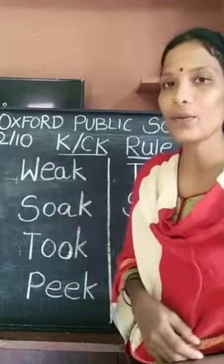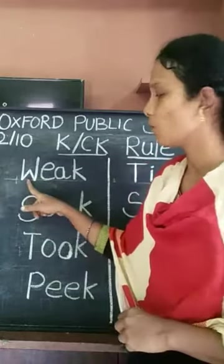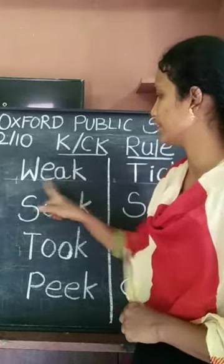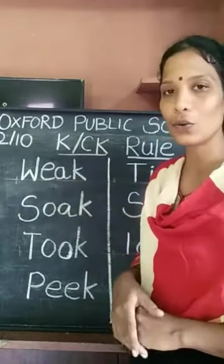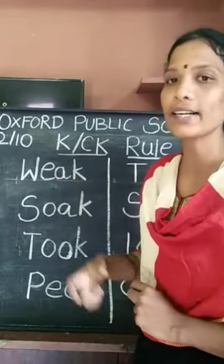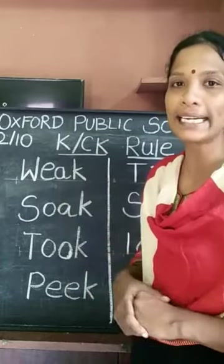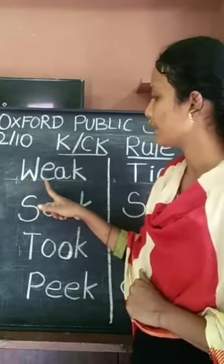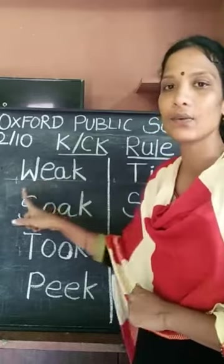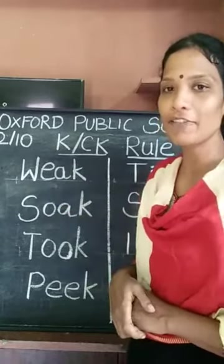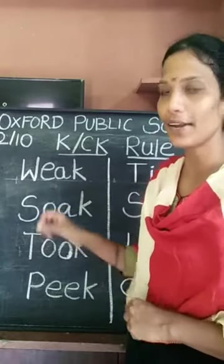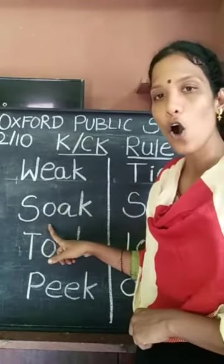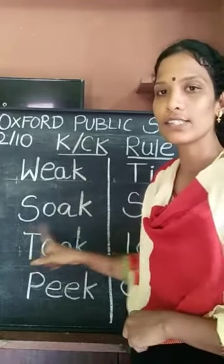Let's read the word once again. W - E - K. Weak. You all know the two vowel rule, isn't it? So use that rule and read these words. W - E - K. Weak. Listen carefully once, then you can try. S - O - K. Sook.